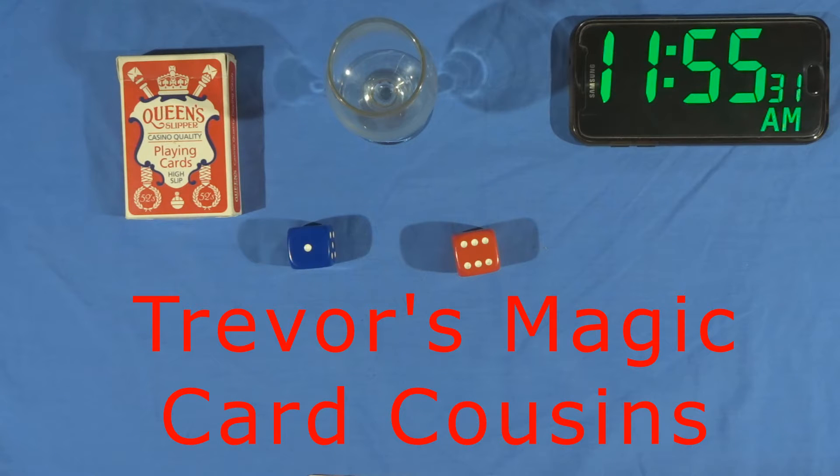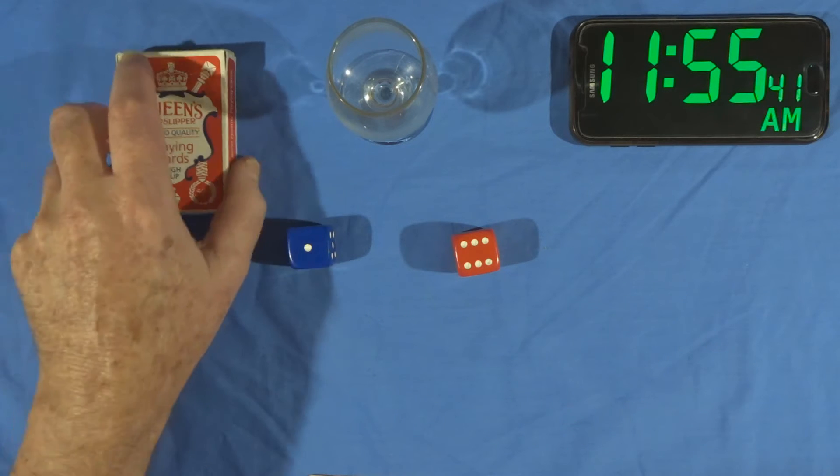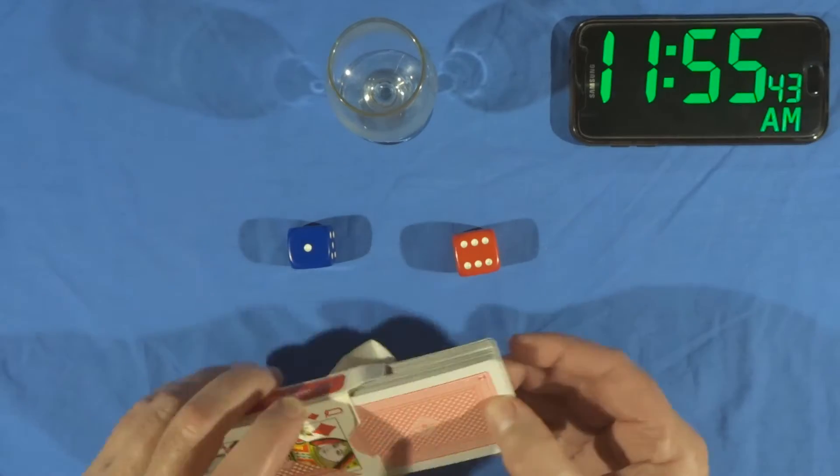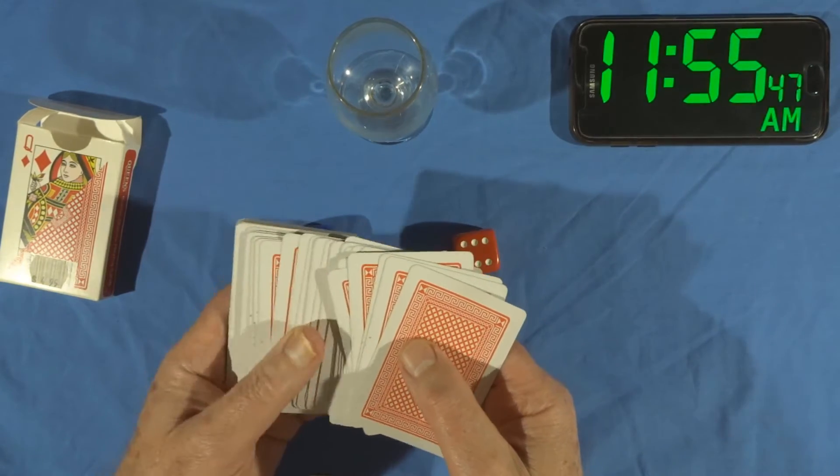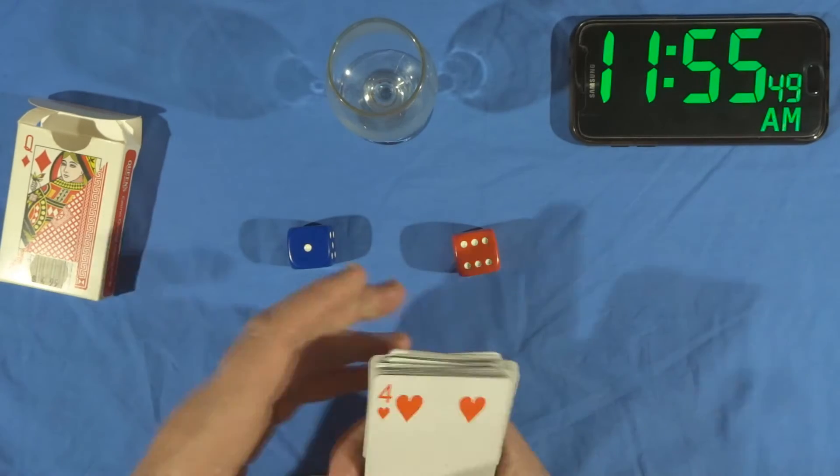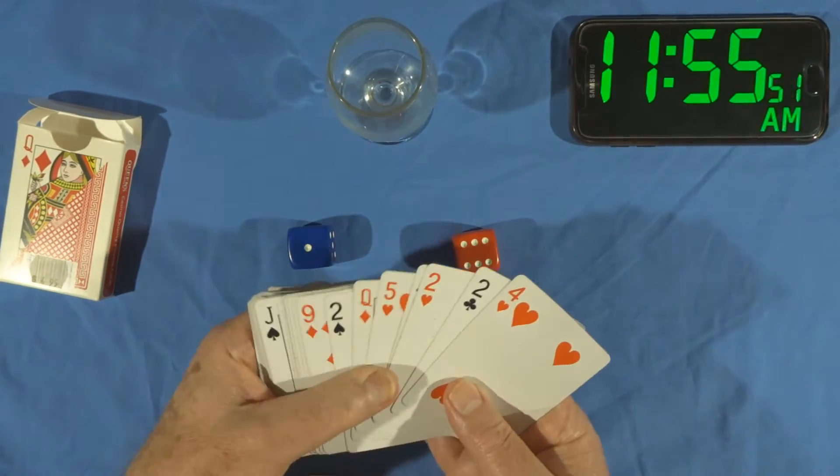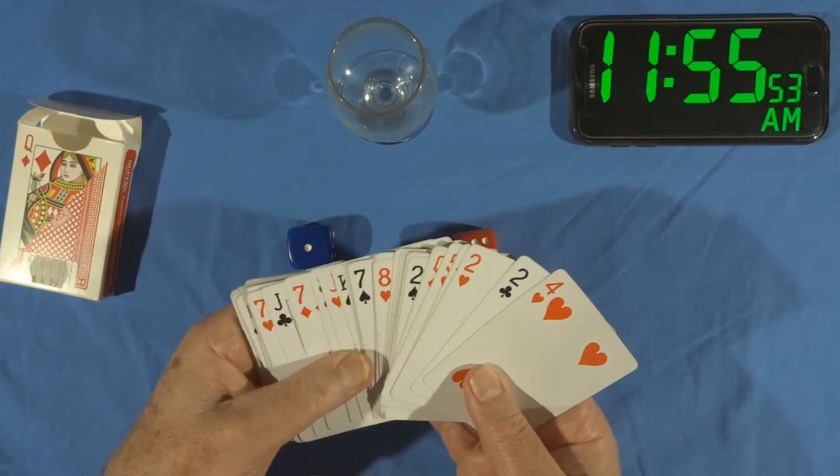Trevor's magic card cousins uses a pack of playing cards, two dice to select a card, and a clock for you sceptics who don't believe in magic. As you can see there are unmarked Queen Slipper playing cards and they've been shuffled to mix them up.